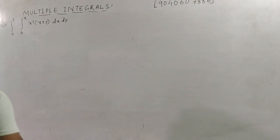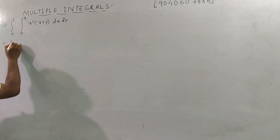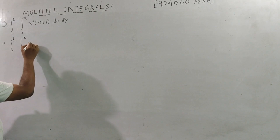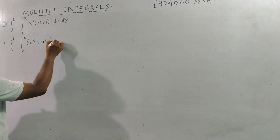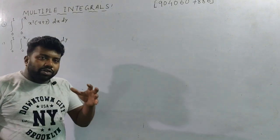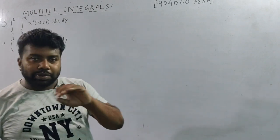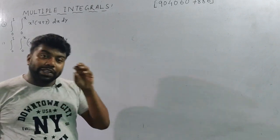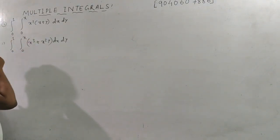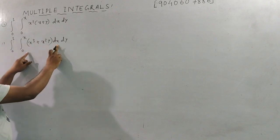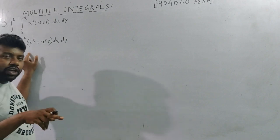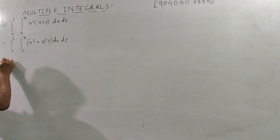Next example: evaluate from 0 to 1, 0 to x, of x³ + x²y, dy dx. The constraint is to check the limit of x. If you see the limit of x is a variable, then the limit of the variable is drawn. The limit of the constant is separate from the limit of the variable.